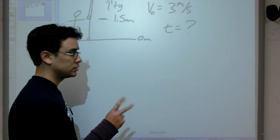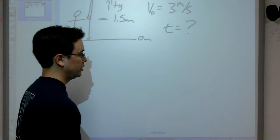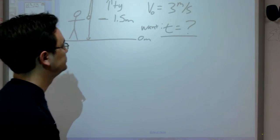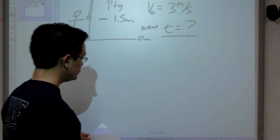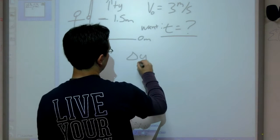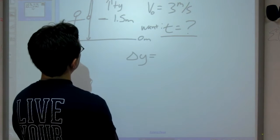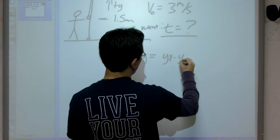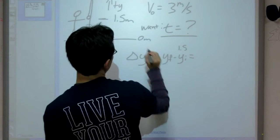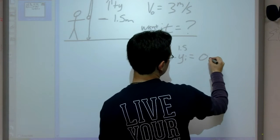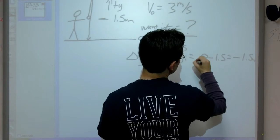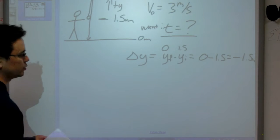So let's take a look at our two questions: what we want and what we have. What we want is the time. It's what we're trying to solve for. Let's take a look at what we have. Going across our variables, we have delta y. Delta y is nothing more than y final minus y initial. We know our initial position, which is 1.5. We know our final position, which is 0, both of which in meters. So we have 0 minus 1.5 equals negative 1.5 meters. So we have our delta y.